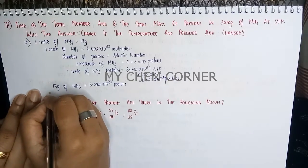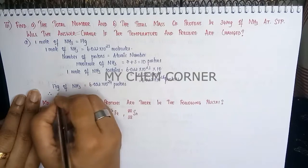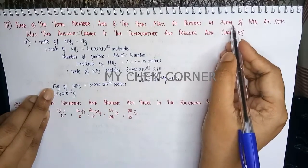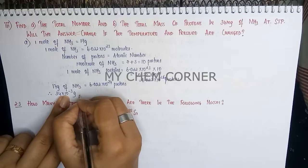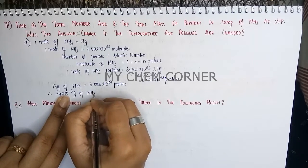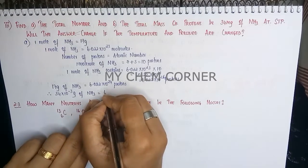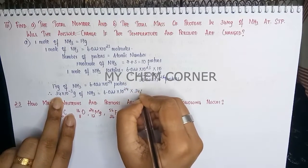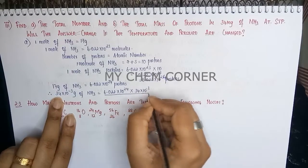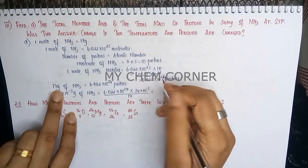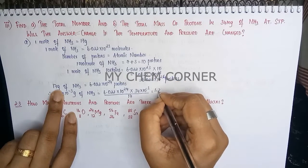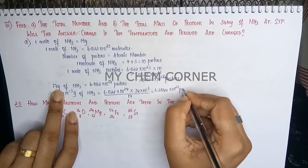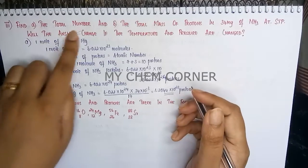Therefore, 34 milligrams becomes 34 × 10⁻³ grams — milligrams must be converted to grams by multiplying by 10⁻³. So the number of protons = (6.022 × 10²⁴ × 34 × 10⁻³) ÷ 17. Cross-multiplying gives 1.2044 × 10²² protons. This answers the first part: the total number of protons in 34 mg of ammonia.